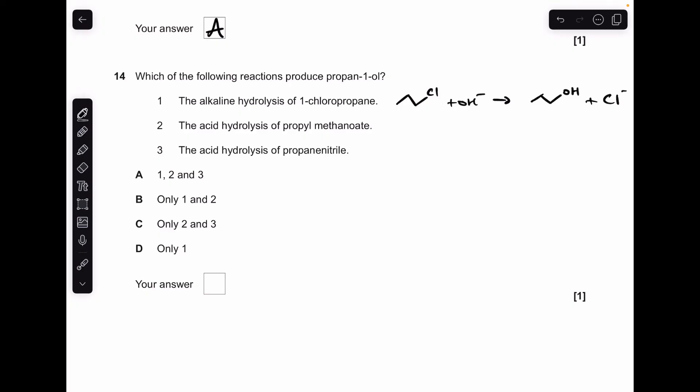Moving on to 14. Alkaline hydrolysis of 1-chloropropane can be represented by that reaction, and you'll see the organic product is propan-1-ol. So that one's right. Acid hydrolysis of propyl methanoate—the equation for that is on the screen now, and you'll see again we've got propan-1-ol, that second product there. So that one was right. And there's the third equation. You'll notice there is no propan-1-ol as any of the products, so three wasn't right. So 1 and 2 only, B is the answer.